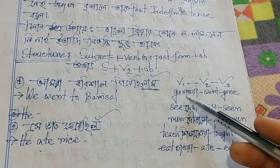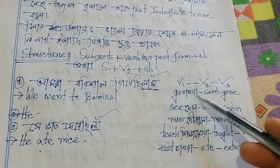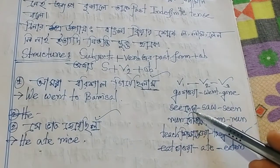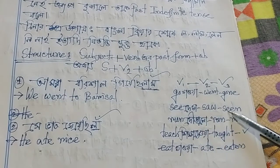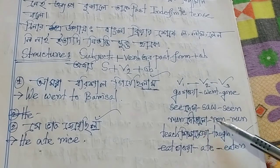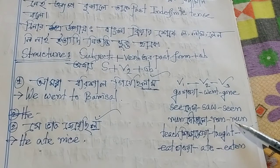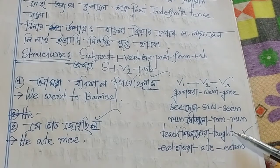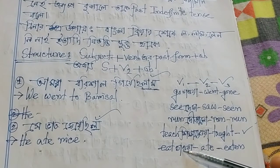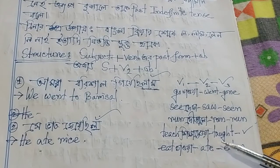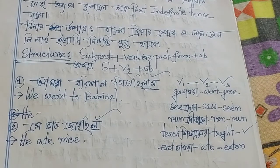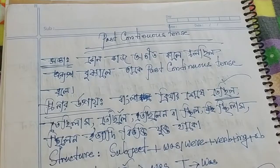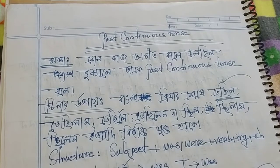For verb forms: go — the V2 form is went, and the V3 form is gone. Run — the V2 form is ran, and the V3 form is run. That's the verb forms question.